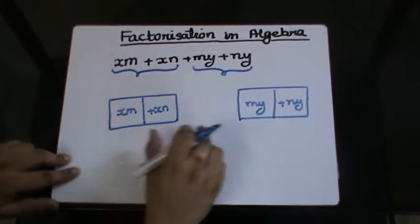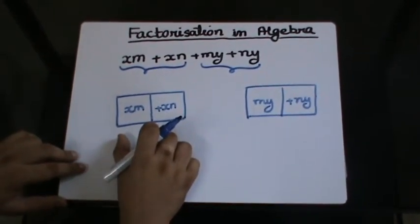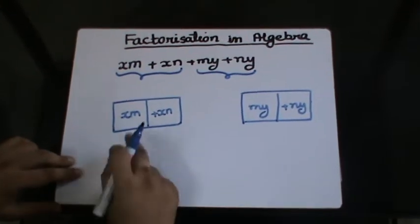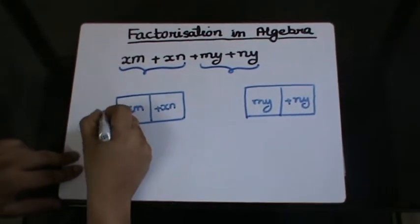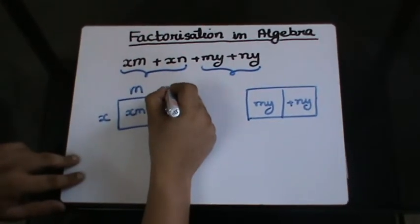Now, these two groups are individually Type 1 factorization, wherein I have to take common. So in these two, x is common. So I will have x times m plus n over here.